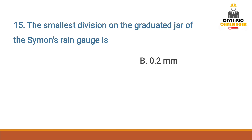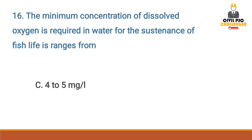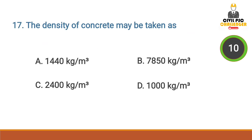Answer option B: 0.2 mm. Next question: the minimum concentration of dissolved oxygen required in water for the sustenance of fish life ranges from — answer option C: 4 to 5 milligram per liter. Next question: the density of concrete may be taken as...